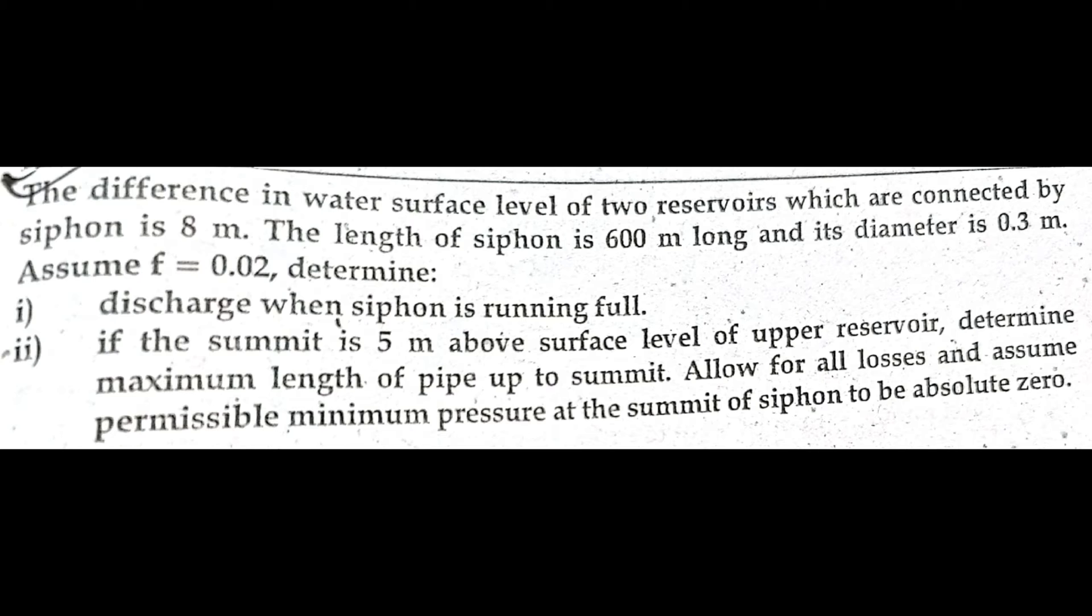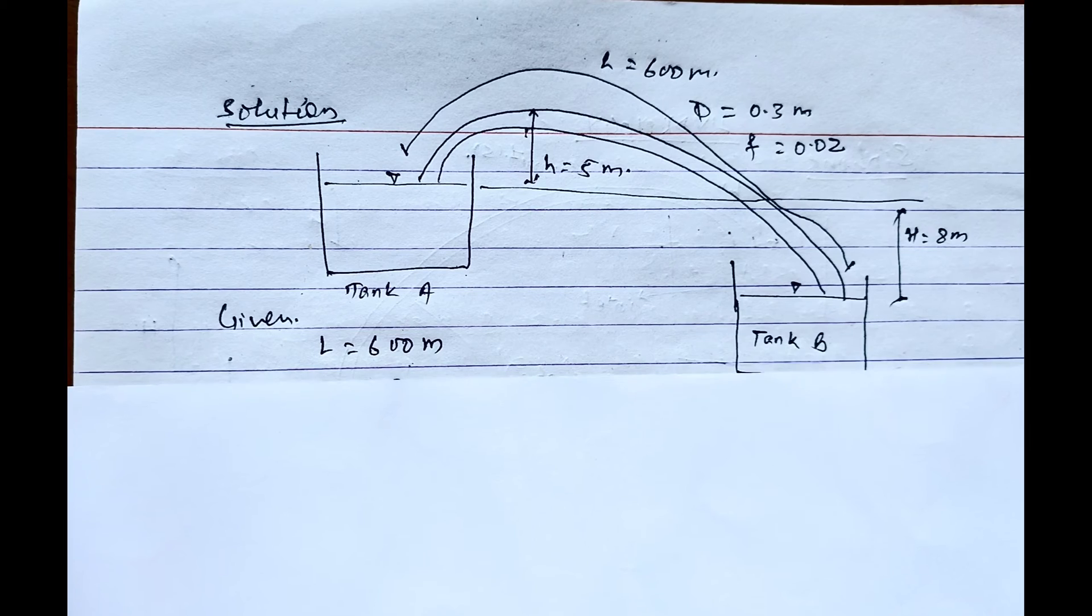Allow for all losses and assume permissible minimum pressure at the summit of siphon is to be absolute zero. So let's start the question with solution. Here the given data on the question is: